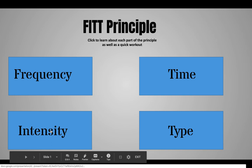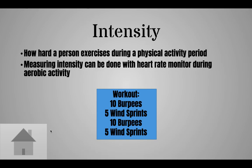The next letter is I for intensity. Intensity is how hard a person exercises during a physical activity. Measuring intensity can be done with a heart rate monitor during aerobic activity. You can relate this to walking, jogging, and running. Walking is very low intensity and you can do it for a long period of time. Jogging is medium intensity — you can do it for a while, but eventually you might get tired. If you are sprinting or running, that is high intensity and you won't be able to sustain it for a long period of time.